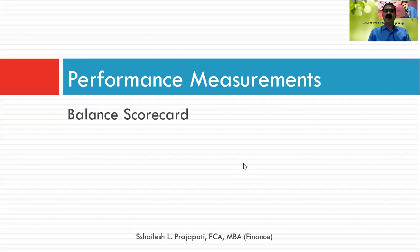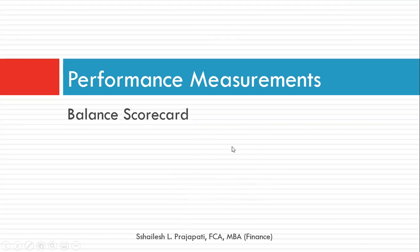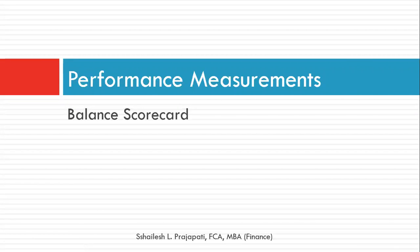Hello friends, welcome to the 11th lecture of Financial Planning and Control Systems. For today we will see the Balanced Scorecard. The Balanced Scorecard is about a performance evaluation system which we normally call KRA or MBO of a particular company, person, organization, or department. Let us have a detailed analysis of what the Balanced Scorecard is and how it is applicable to the present scenario in the organization.